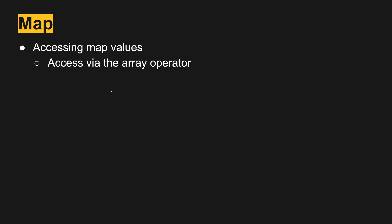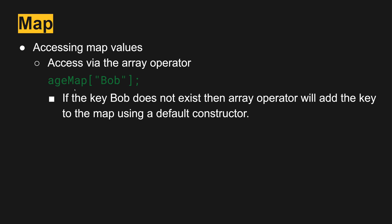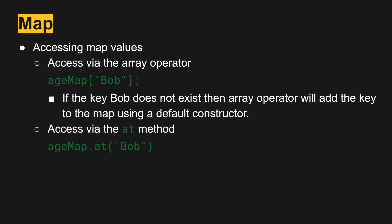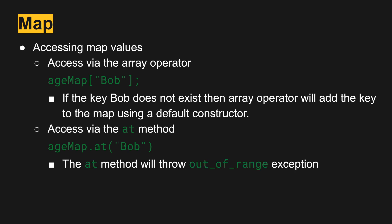To access map values, we use the array operator — the brackets. So we can access Bob's age using age map with the square brackets with Bob in between. If Bob does not exist, however, when we use the array operator, it'll automatically add it using a default constructor. On the other hand, if we access with the at method, then it will return an exception that we can catch.